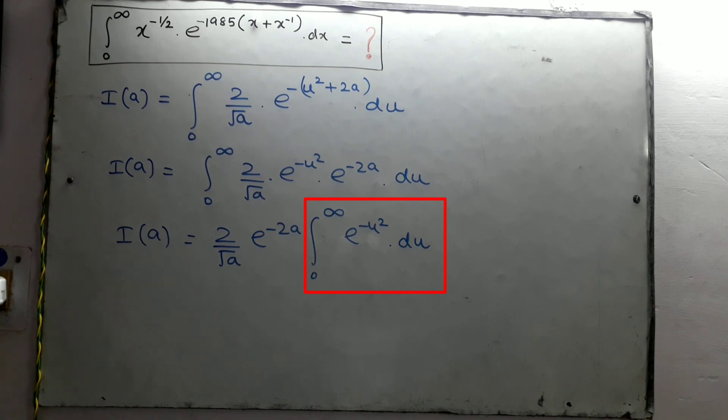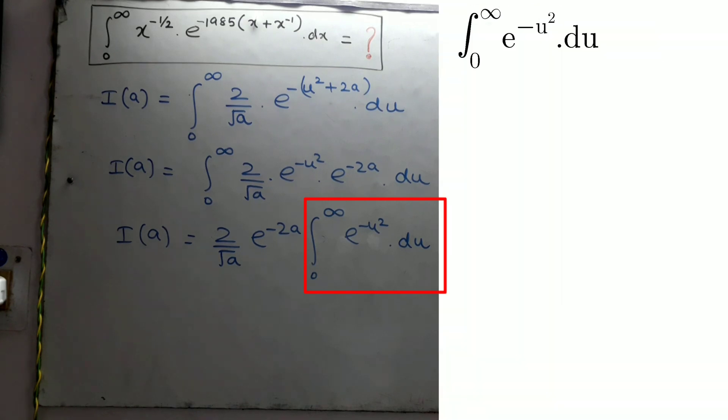Now to solve this last integral, put u equals square root of z. Then du is equals to 1 upon 2 square root of z dz, and limit from 0 to infinity.